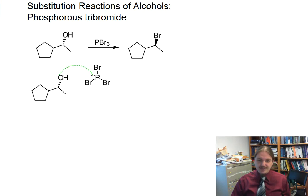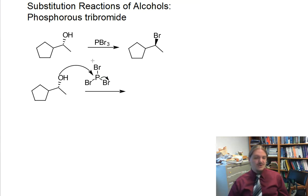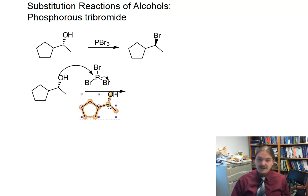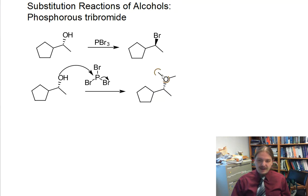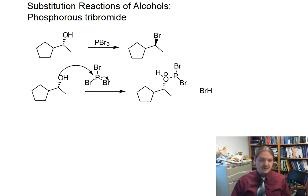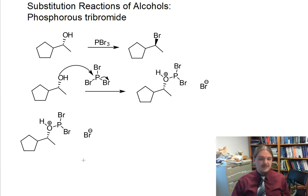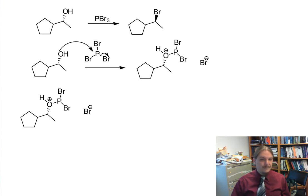The idea of what we start with is nucleophilic attack from the alcohol onto the phosphorus. There are no phosphorus-oxygen double bonds or anything to break here, so this has to look very much like an SN2 reaction at phosphorus. Now we have the phosphorus attached to our oxygen; the oxygen still has its extra hydrogen on it, and the phosphorus still has two bromines on it. Each molecule of PBr3 can convert three molecules of alcohol into the corresponding alkyl bromide.